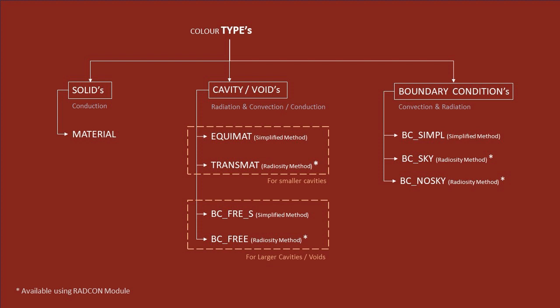For larger cavities, which is in size of a larger void or a room, we choose the type as BC_FREE_S for simplified radiation and BC_FREE for detailed radiation. For boundary conditions, we choose BC_SIMPL for simplified radiation and BC_SKY for radiosity method. We hope now you can clearly distinguish when to use which type during analysis.